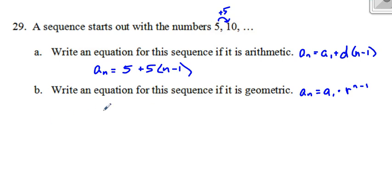If it's geometric, I'm doing something different. Then I'm multiplying, and if I go from 5 to 10, I know I'm doubling, so that's times 2. I started at 5, my ratio is 2 to the power of n minus 1.